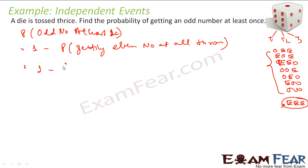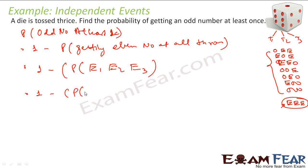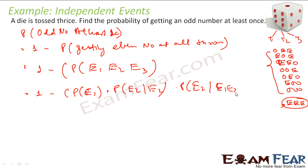So this becomes one minus the probability of getting an even number in all throws. That means: probability of getting an even number in the first throw, second throw, and third throw. By the multiplication theorem, this becomes: one minus P(E1) × P(E2|even) × P(E3|even).